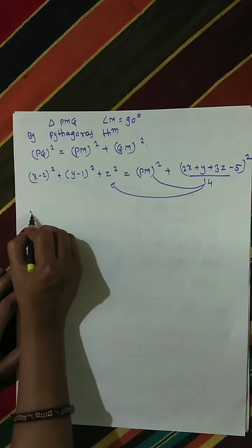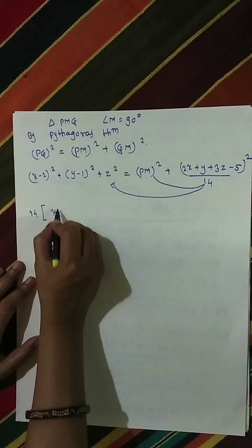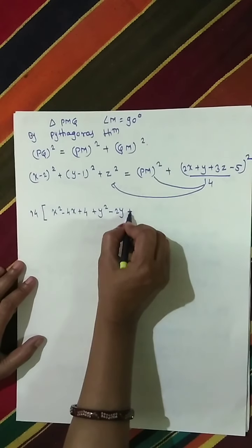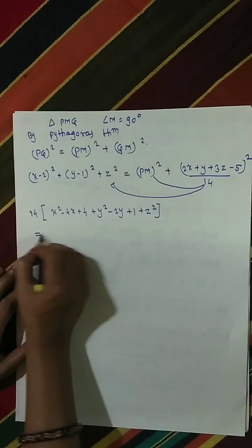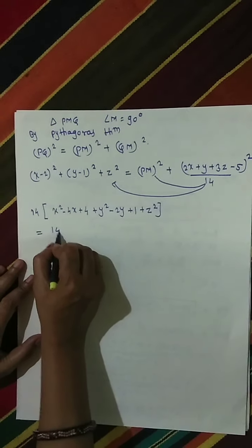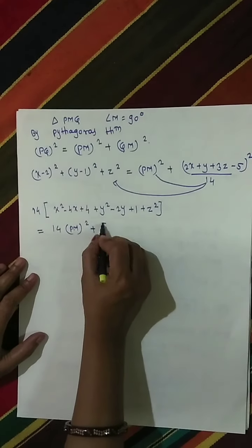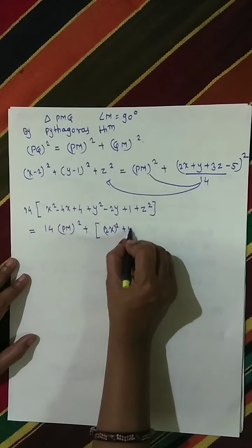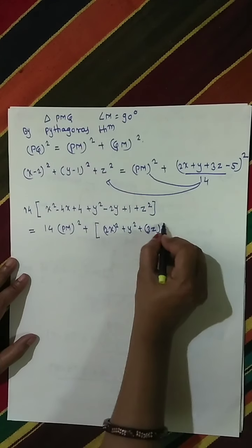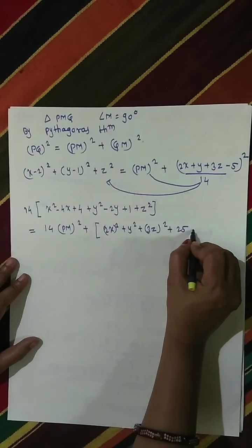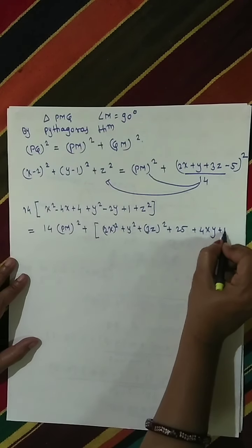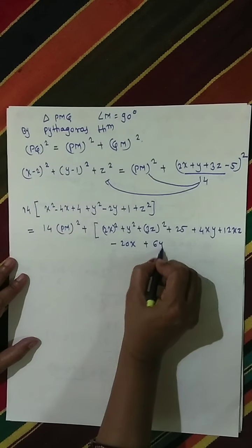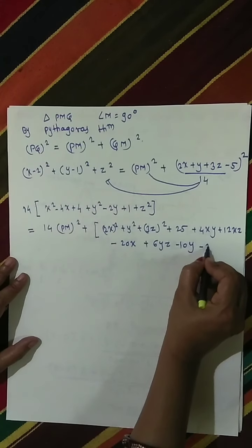Multiplying through by 14: 14 times [(x minus 2) squared plus (y minus 1) squared plus z squared] equals (2x plus y plus 3z minus 5) squared. Expanding: 14(x squared minus 4x plus 4 plus y squared minus 2y plus 1 plus z squared) equals the expanded right-hand side with cross terms in xy, xz, yz. This gives equation number 1.